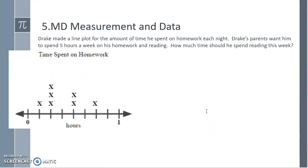Drake made a line plot for the amount of time he spent on homework each night. Drake's parents want him to spend five hours a week on his homework and reading. How much time should he spend reading this week? I notice that I'm grouped into one, two, three, four, five, six, seven eighths, so we're grouped into eighths. I have one one eighth, three copies of two eighths, two copies of four eighths, and one copy of six eighths.